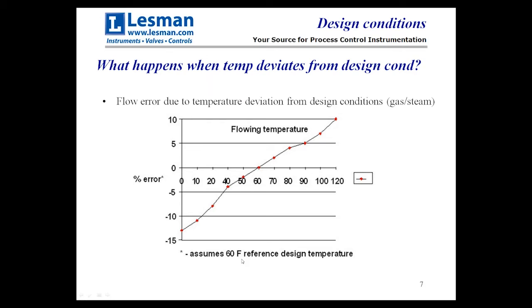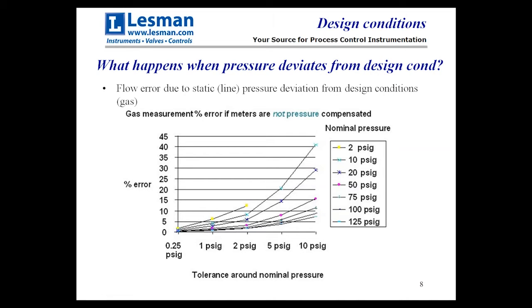Here's a chart that shows what happens when the temperature deviates from the design condition. The design condition was stated as 60 degrees F, so right at 60 degrees F we see 0% error on our vertical scale. If we move up 10 degrees, we see approximately a 2.5% error for a plus 10 degree change. Moving down to 50 degrees gives about a 2% negative error. The same thing happens when you deviate with pressure — it depends on your operating pressure. A half PSI change has more effect on a 2 PSI static pressure than on a 100 PSI static pressure. At the lower pressure, you can see the error is much greater, and you still get a substantial percentage of error moving a couple PSI off design conditions.